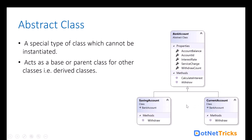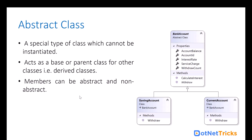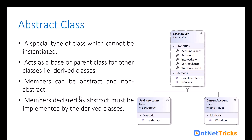If you look at this picture, we have a withdraw method. This withdraw method has a different implementation for the saving account and a different implementation for the current account. So we create an abstract class whenever we want to create both abstract as well as non-abstract methods. And whatever method you have declared as abstract in the abstract class, it is mandatory to implement it in the derived class. In the saving account and the current account, we are implementing the withdraw method, which is part of the bank account abstract class.